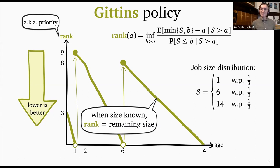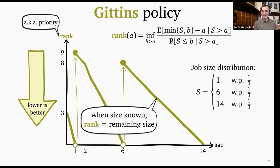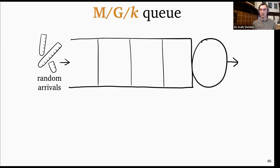The MG1 is the simple system we know how to solve. Let's now talk about the MGK, which is a much more complicated system. The MGK is basically like the MG1 except we've got K servers instead of just one. We give each server speed 1/K so we still have the same total service capacity — same size distribution, same arrival rate, same load. But now when a job runs on a server with size S, it will take K·S time to complete. The scheduling policy now has to pick K jobs to serve — if we have more than K jobs, we can't pull the servers together.